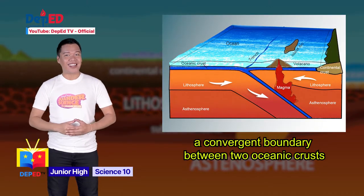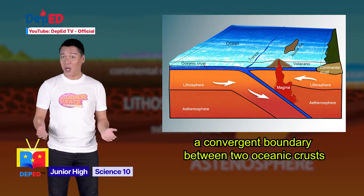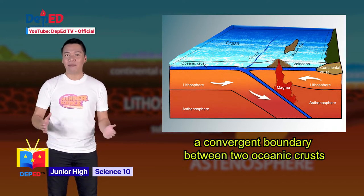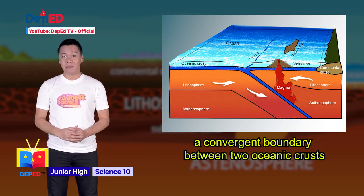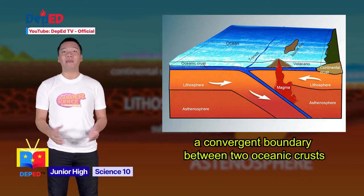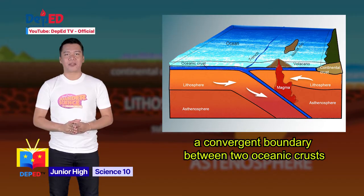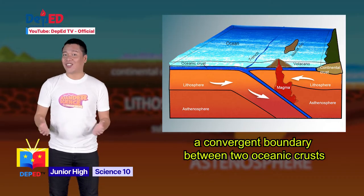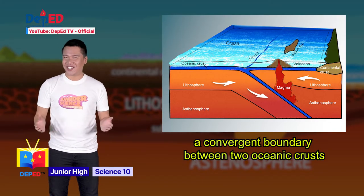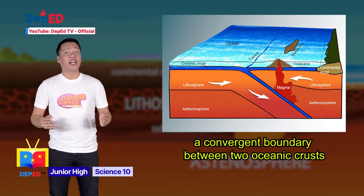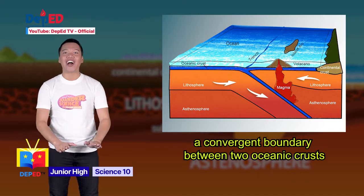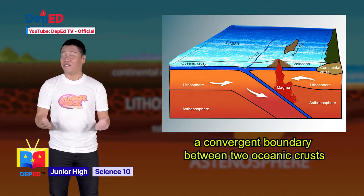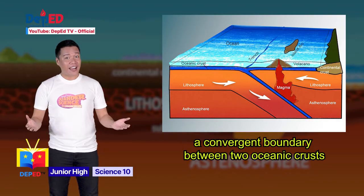What process along with convergence of plates is shown? This experiment demonstrates the processes that occur along a convergent boundary between two oceanic crusts. Remember, when two oceanic plates collide, a subduction zone is generated, which means the older plate is forced under the younger one, and it leads to the formation of island arcs.